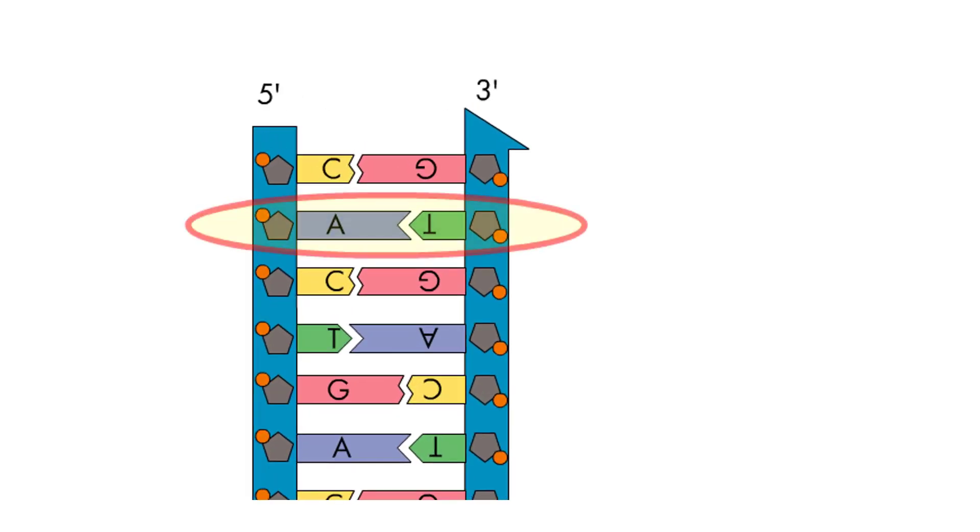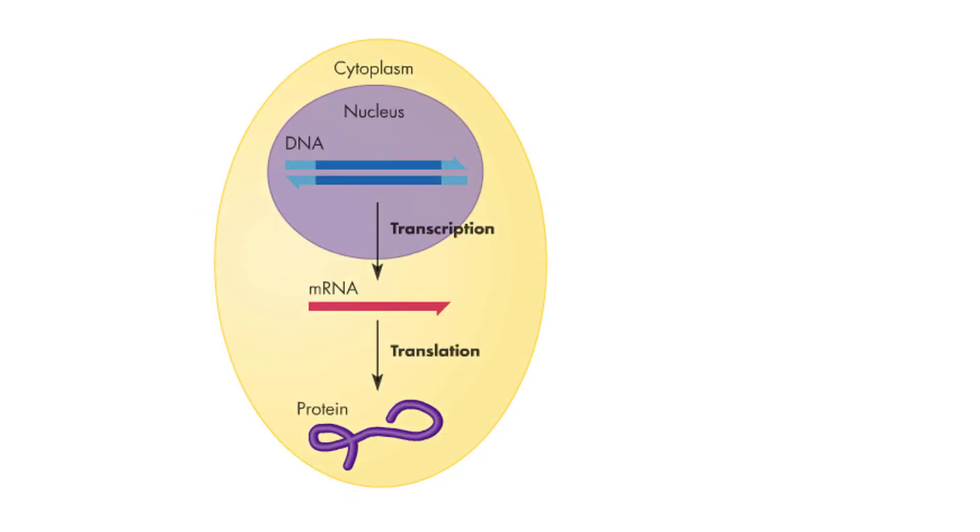Mutation is a change in the base sequence of an organism's DNA. Because the base sequence of DNA determines the base sequence of mRNA, and the base sequence of mRNA, in turn, determines the order of amino acids in a protein, some mutations alter the structure and function of proteins.